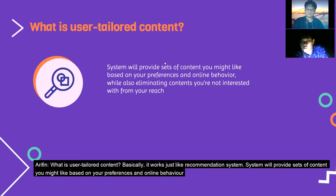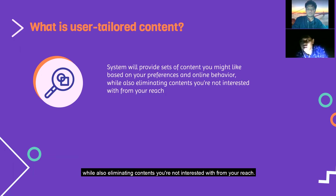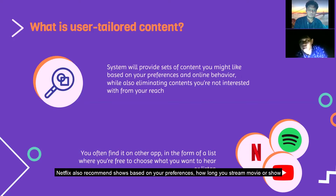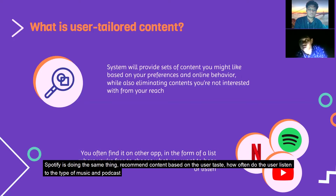What is user tailored content? Basically it works like a recommendation system — the system provides a set of content you might like based on your preferences and online behavior, while also eliminating content you are not interested in. You can find this in other platforms too: YouTube recommends videos not just based on your search history but also on what videos you've finished; Netflix recommends shows based on your viewing preferences; and Spotify recommends content based on the type of music and podcasts the user listens to.